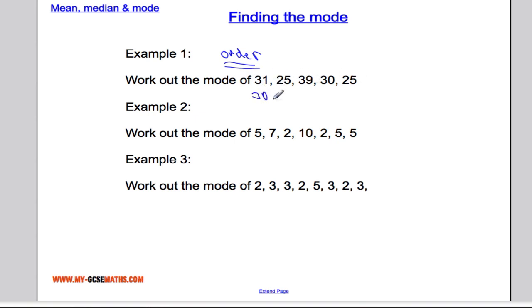We get 25, 25, 30, 31, and 39. Now, which data point appears the most? 25 does. It appears twice. So my mode is 25.